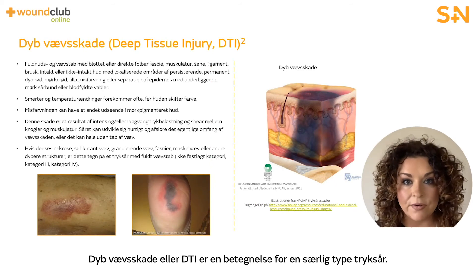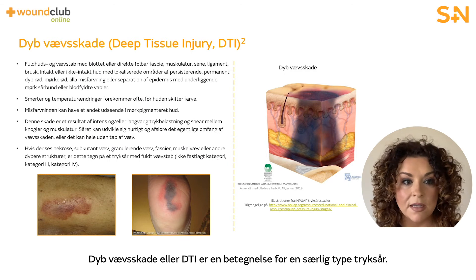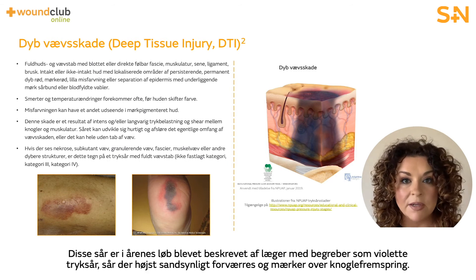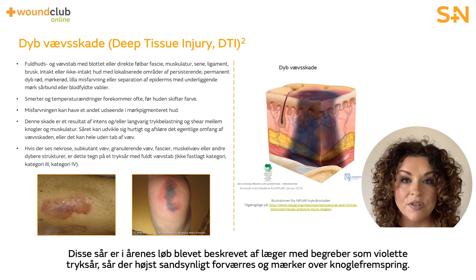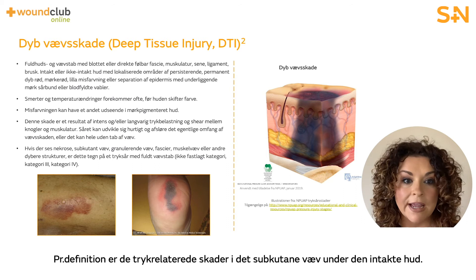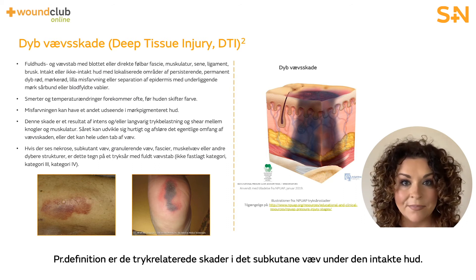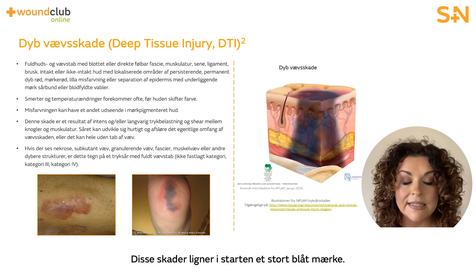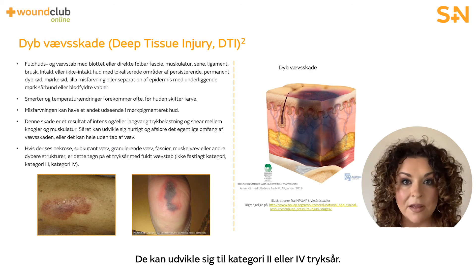Deep tissue injury (DTI) is a term used to describe a unique form of pressure ulcers. These ulcers have been described by clinicians for many years with terms such as purple pressure ulcers, ulcers that are likely to deteriorate, and bruises on bony prominences. By definition, they are pressure-related injury to subcutaneous tissues under intact skin. Initially, these injuries have the appearance of a deep bruise. They may lead to the development of a category three or four pressure ulcer.